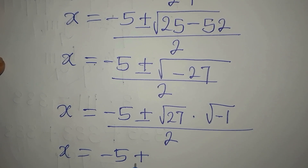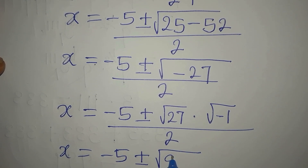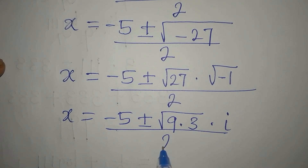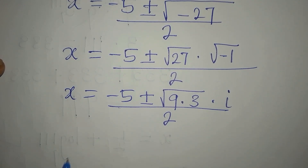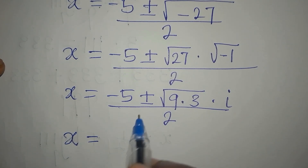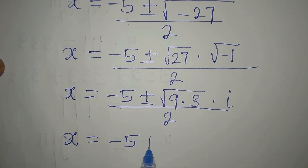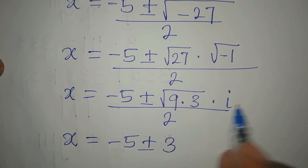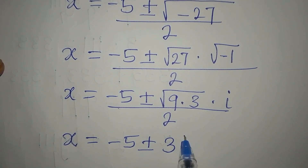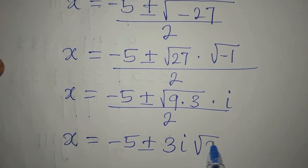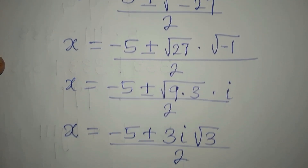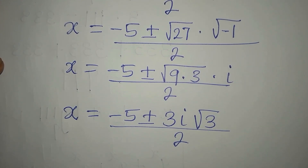Since √(-1) = i, and √27 = √(9·3) = 3√3, we get x = (-5 ± 3i√3) / 2.